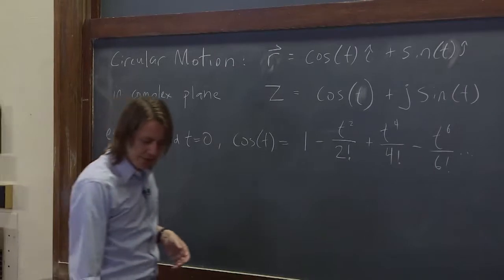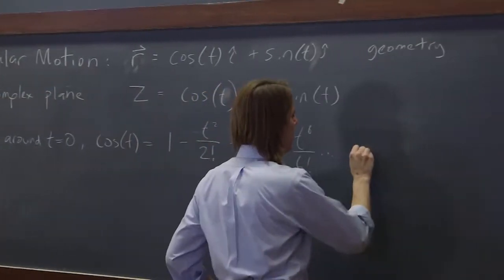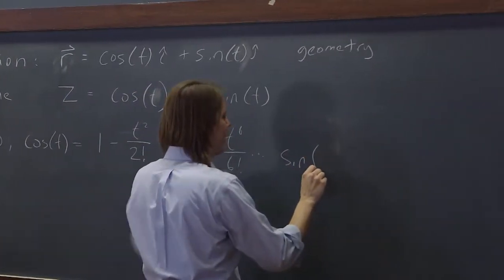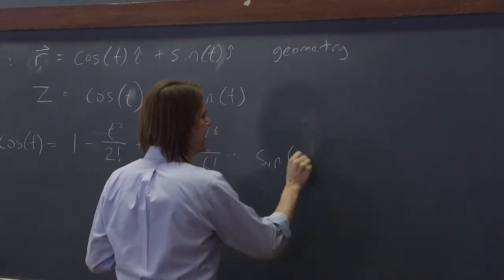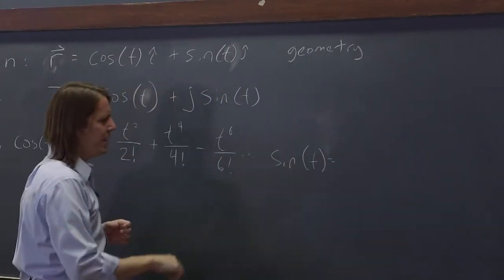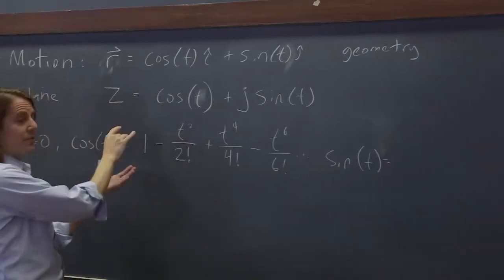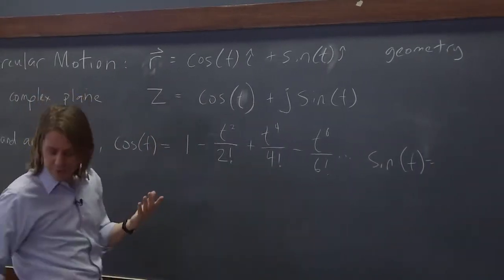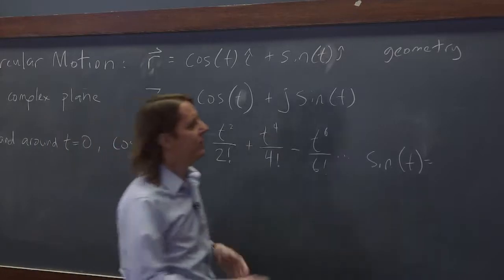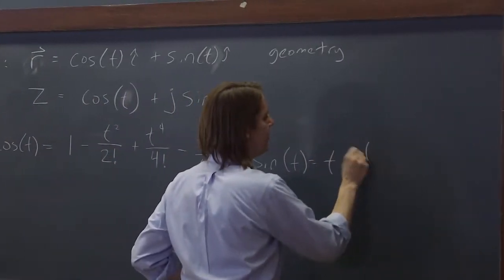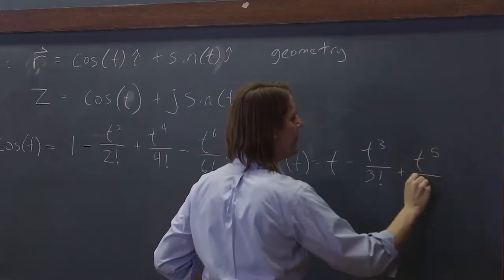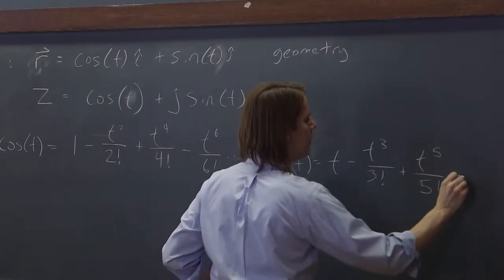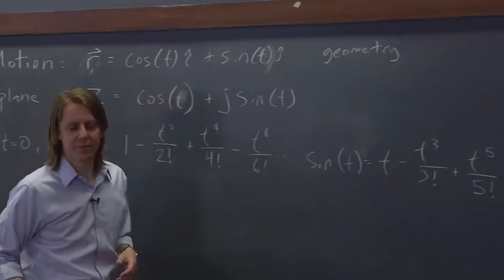So if you ever forget them, you can always get them back. And then sine, kind of the opposite stuff happens. Let's expand sine of t and see what we get. So in this case, the constant term is gone - the sine of zero is zero. So you get t, and then minus t cubed over three factorial plus t to the fifth over five factorial, and that goes up forever.